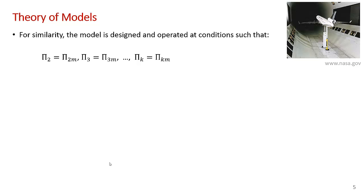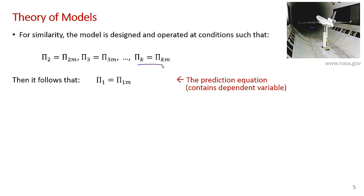For similarity, you design a scaled model and operate that model at conditions such that you have exactly the same pi parameters. For example, for this aircraft in the wind tunnel, you'd set pi 2 for the full-scale aircraft equal to pi 2 for the model, pi 3 equal to pi 3 for the model, and so on, all the way up to however many pi parameters you have.